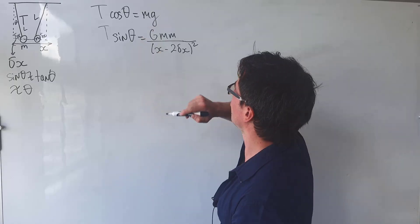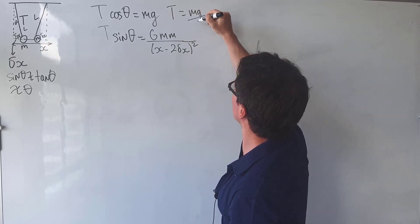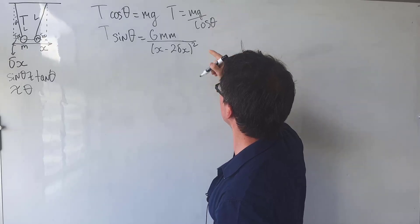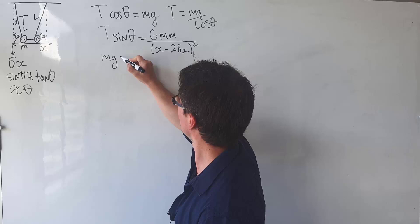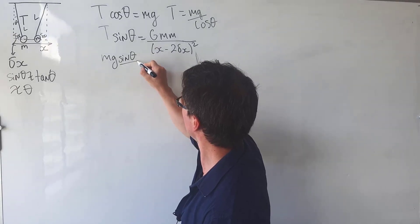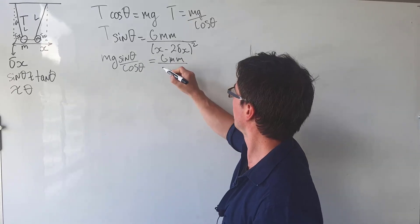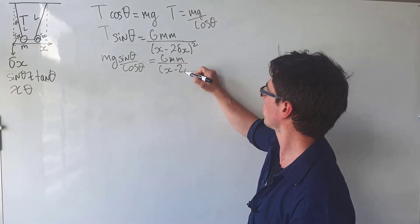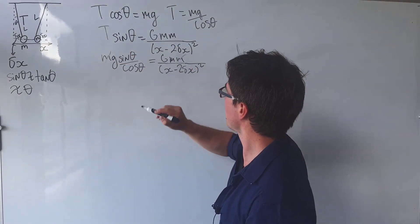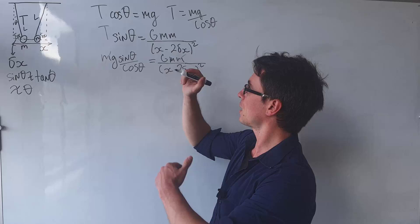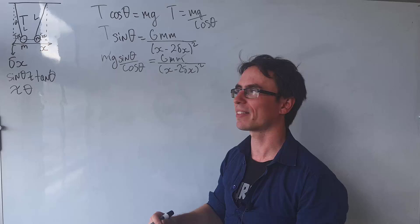So let's rearrange the first equation for T. So T will be equal to mg over cos theta. Let's plug that into here. What we're going to get is that mg sine theta over cos theta is equal to gmm over x minus 2 delta x squared. We can cancel out the m's. Additionally, we can magically make this sine theta over cos theta turn into a tan theta.